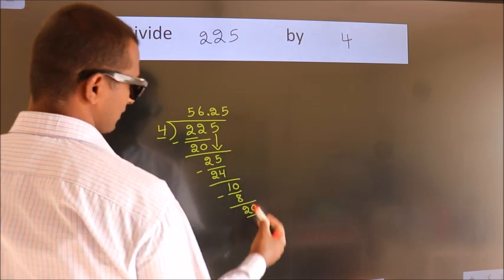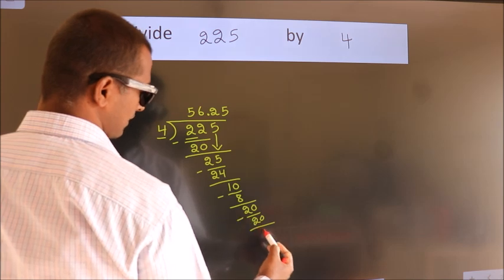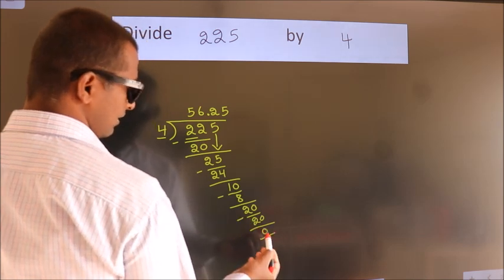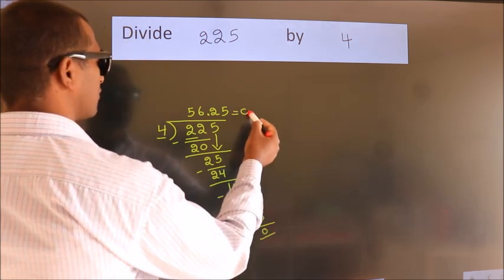Now we subtract and we get 0. We got remainder 0, so this is our quotient. We have the decimal.